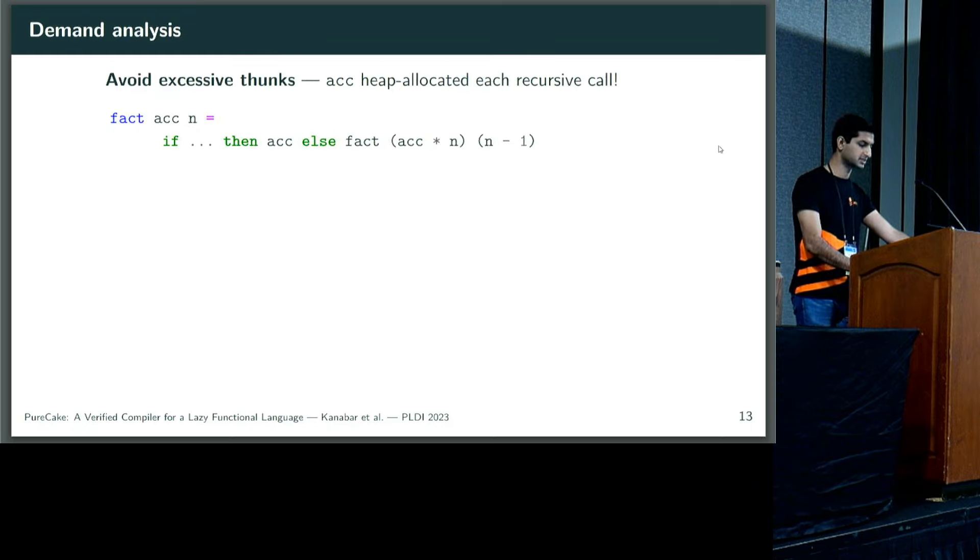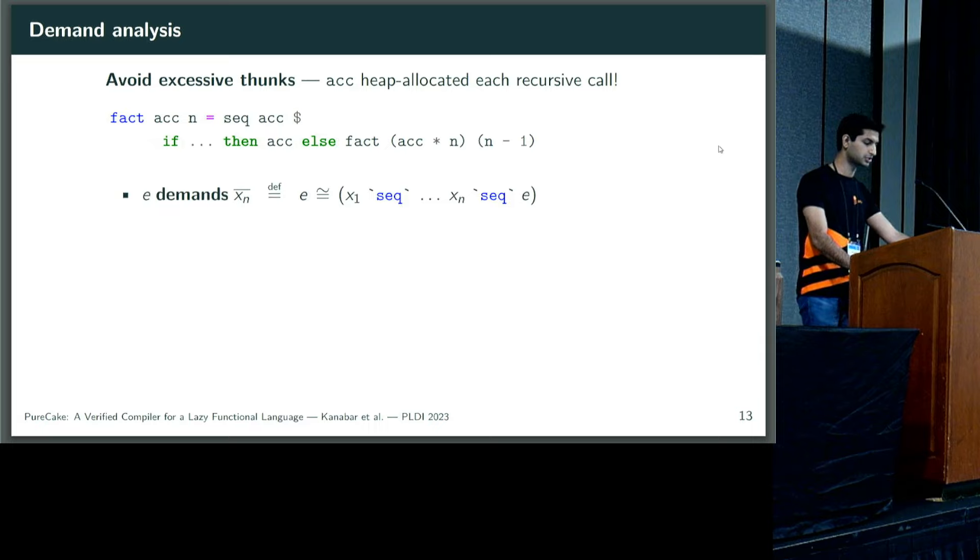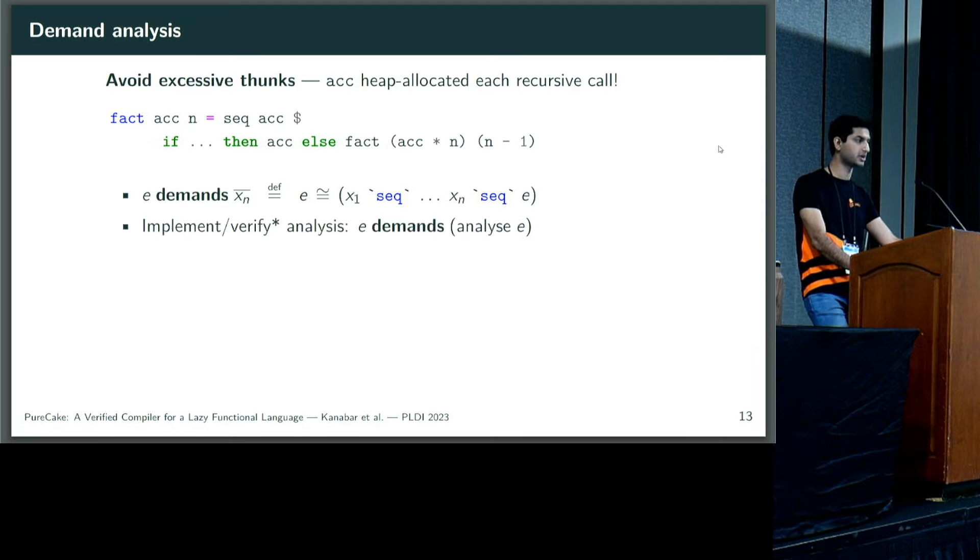Last in the front end is demand analysis, whose goal is to avoid excessive heap allocations. Considering the factorial function we saw earlier, each recursive call is doing a multiplication, the accumulator times n. But in a lazy language, this multiplication isn't evaluated until it's inspected in the final recursive call. So each recursive call allocates a thunk, or a suspended computation onto the heap, which is quite wasteful. The goal of demand analysis is to see that eagerly evaluating the accumulator doesn't change semantics. So we can use Haskell's seq operator to annotate this code, and future optimizations will ensure that no thunks are allocated for the accumulator. We formalize the notion of demands. An expression e demands a set of variables xn if it is equivalent in our equational theory to eagerly evaluating each one of these variables before itself. We can then implement and verify an analysis which faithfully extracts these demands.